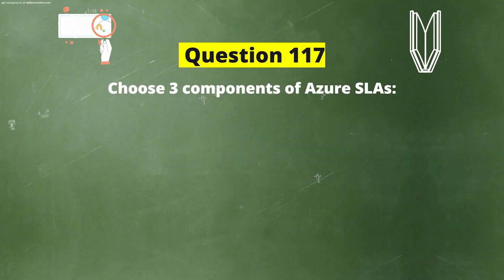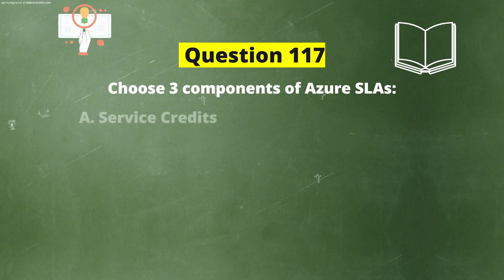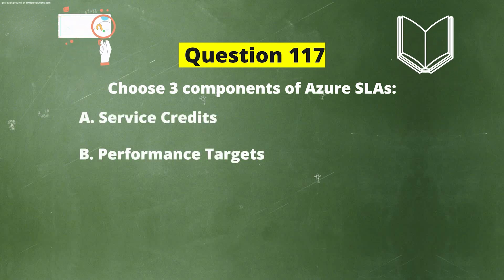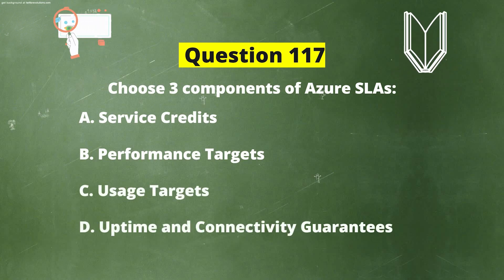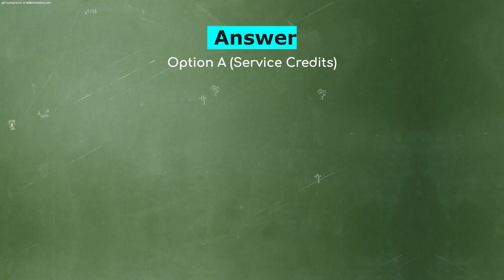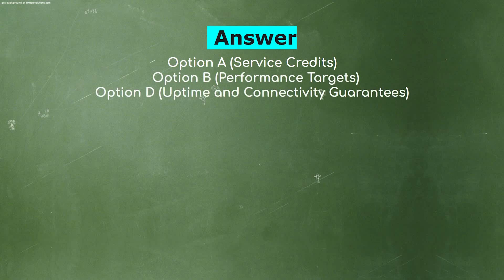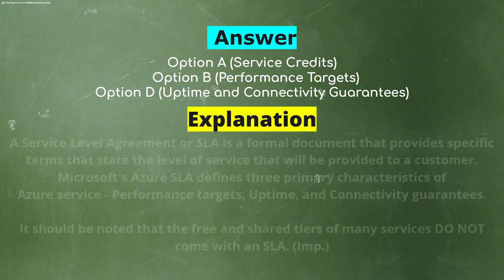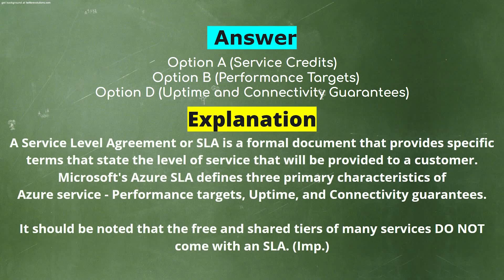Next question. Choose three components of Azure SLAs. Option A: Service credits. Option B: Performance targets. Option C: Uses targets. Option D: Uptime and connectivity guarantees. The correct answers are Option A (Service credits), Option B (Performance targets), and Option D (Uptime and connectivity guarantees). A service level agreement, or SLA, is a formal document that provides specific terms stating the level of service that will be provided to a customer. Microsoft's Azure SLAs define three primary characteristics: performance targets, uptime and connectivity guarantees, and service credits. Note that free and shared tiers of many services do not come with an SLA.